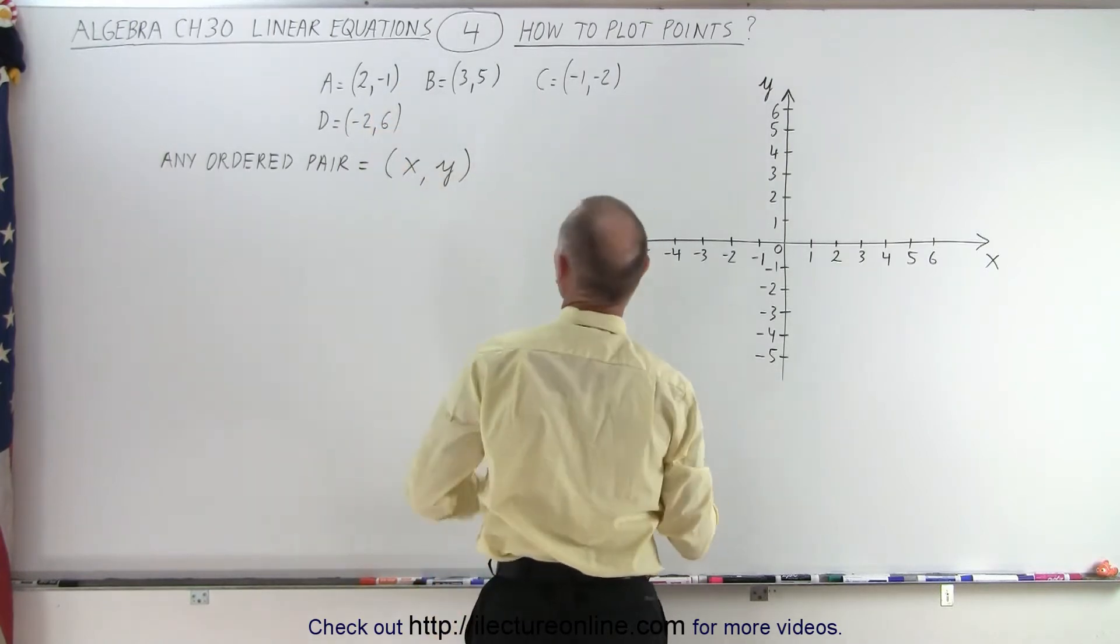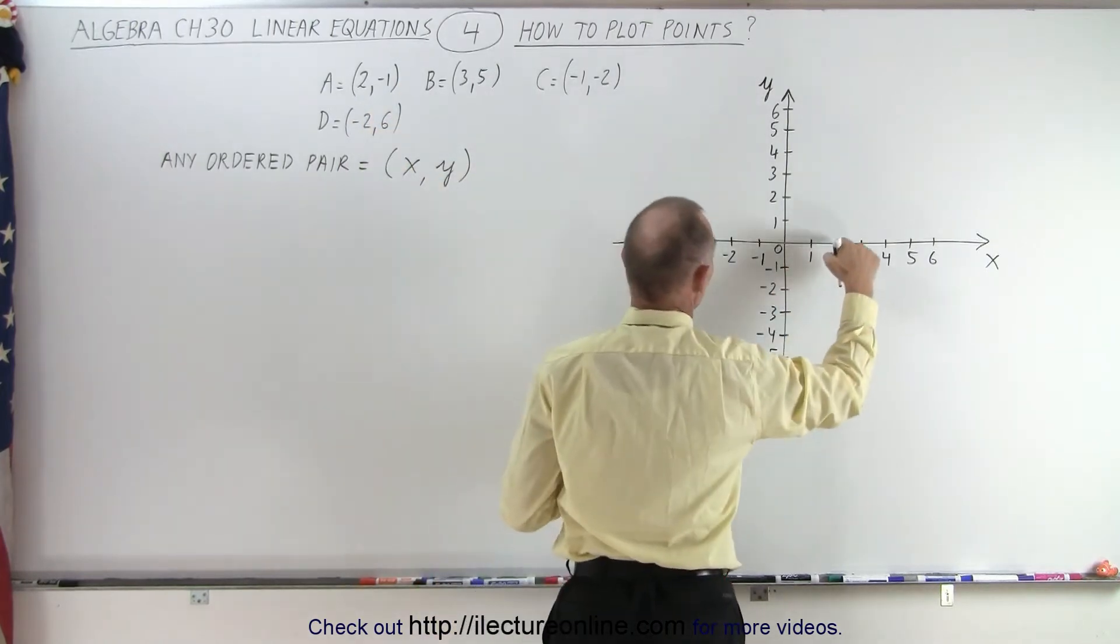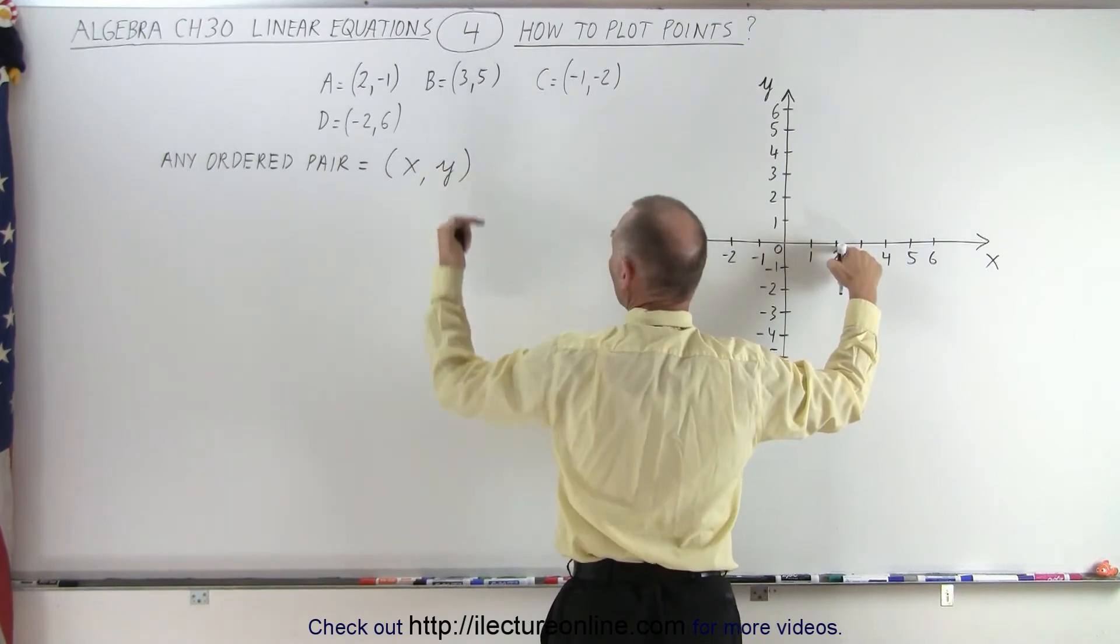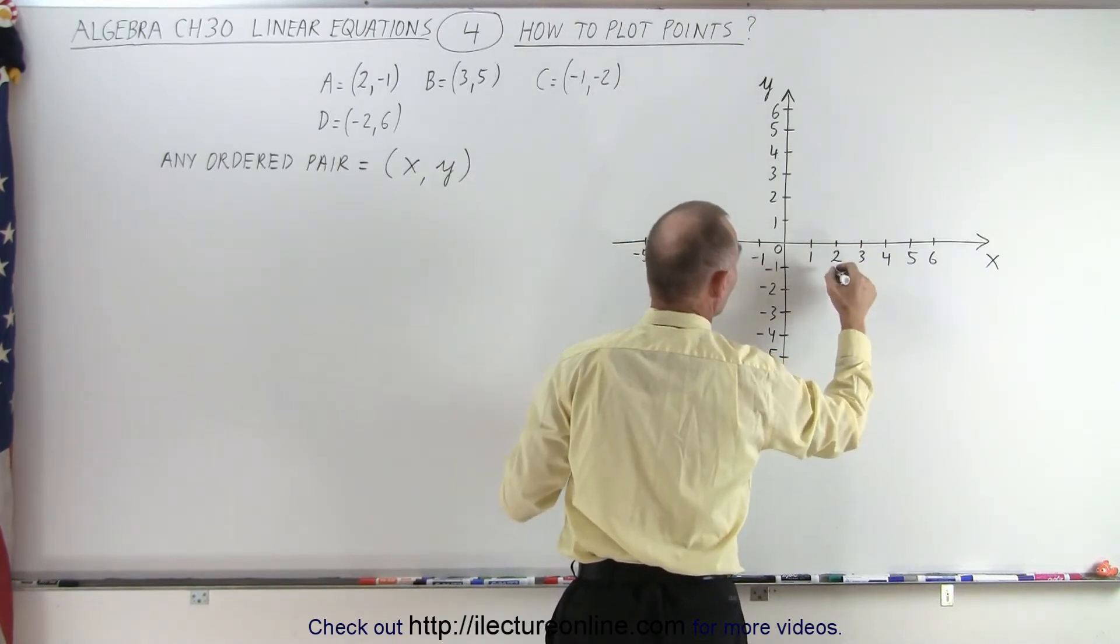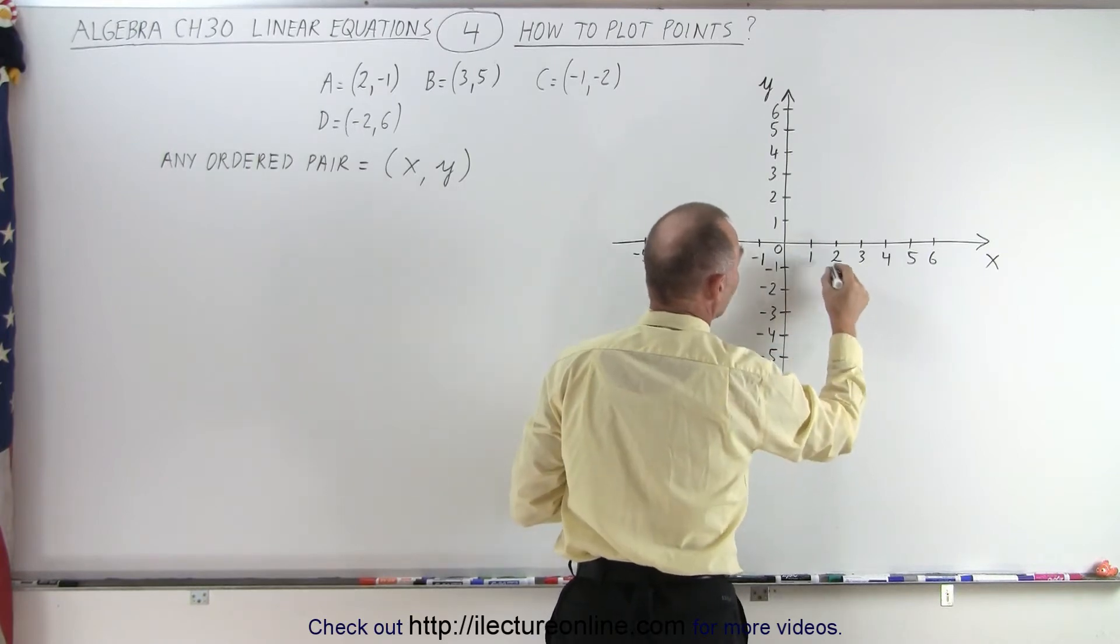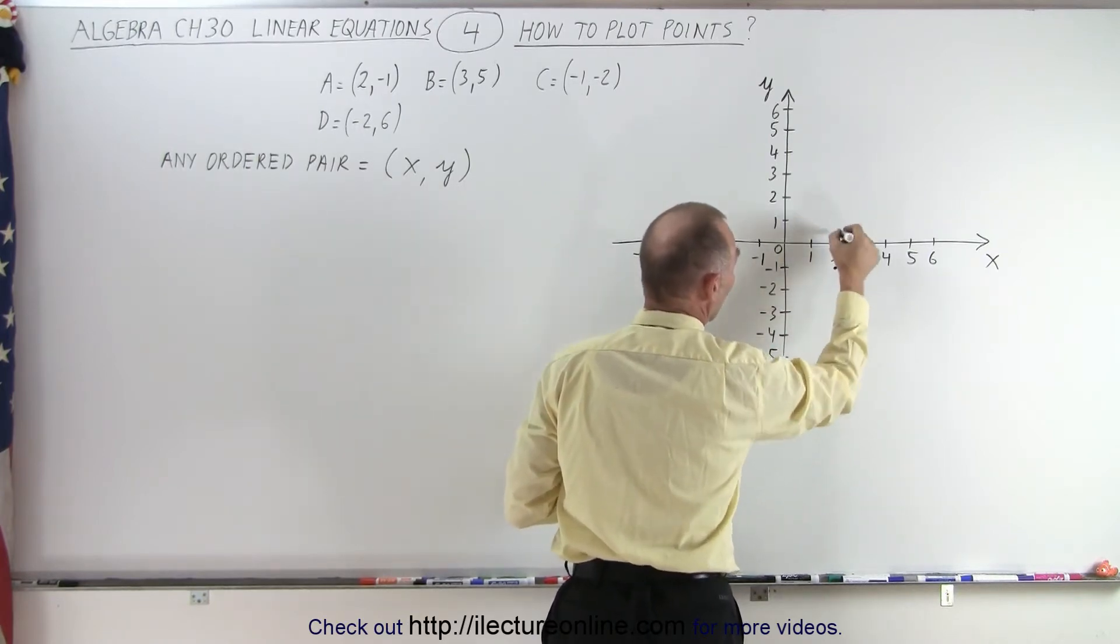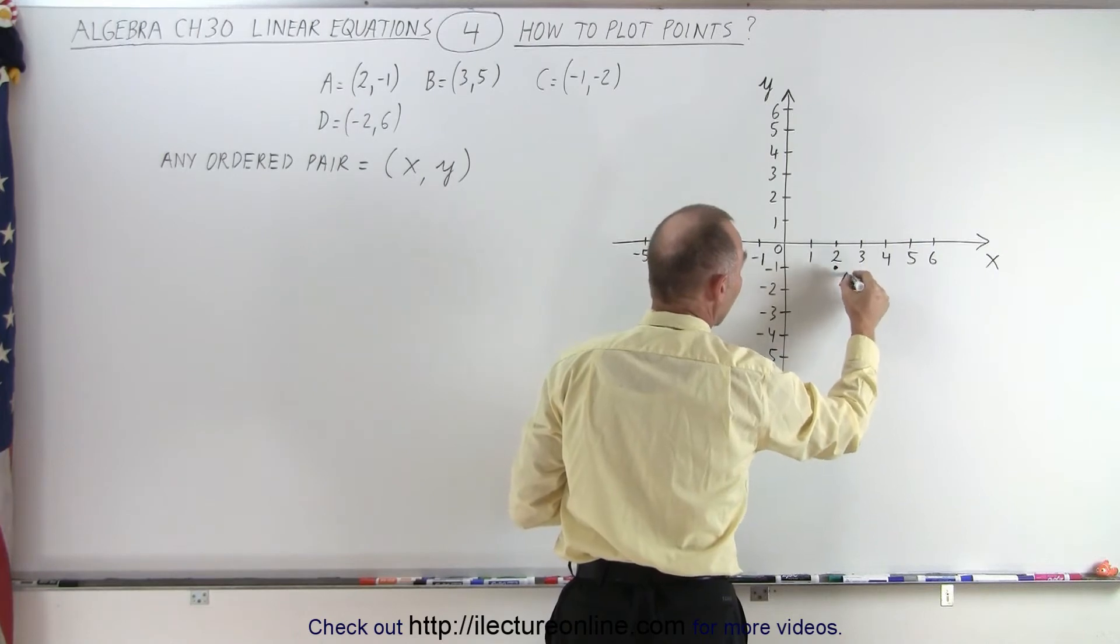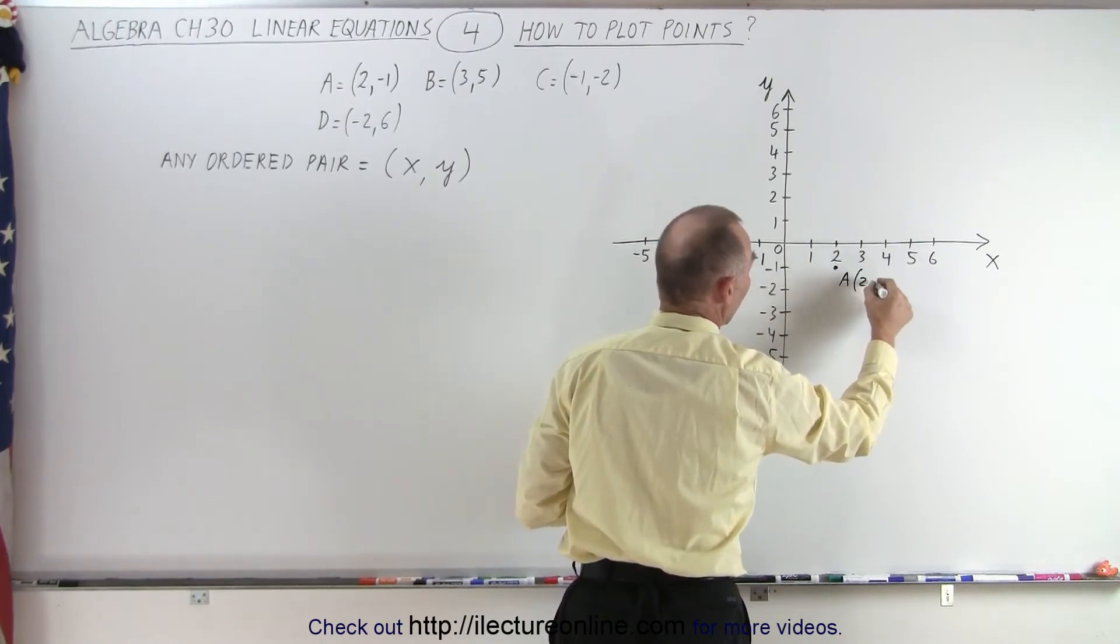In this case, since we have x equals 2, we're right here. Now we drop down one unit to the downward because we have a negative 1 y value. So there's 2 to the right, 1 down. There's your point A, which has the value 2, negative 1.